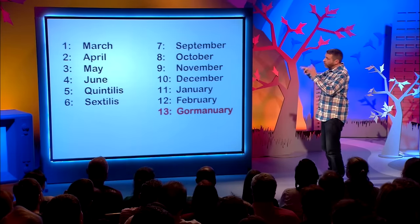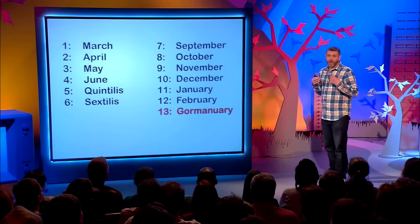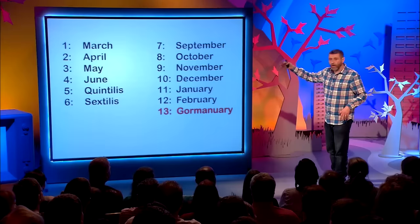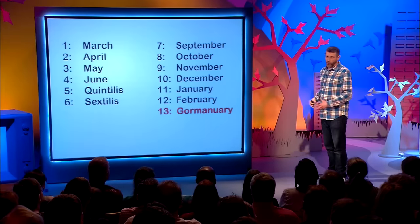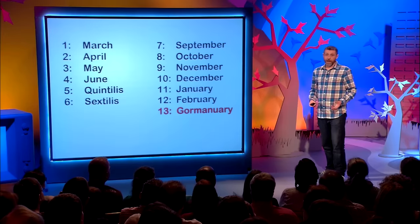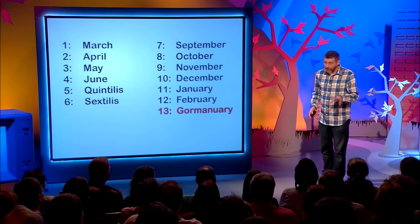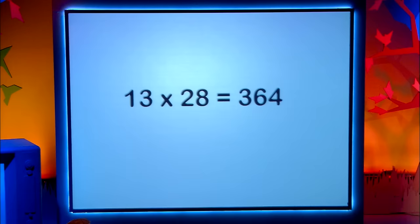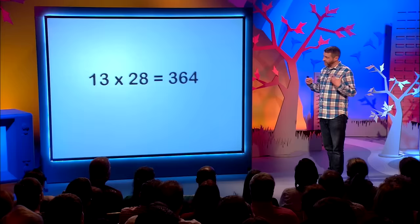March the 1st, New Year's Day, will always be a Sunday — because nobody wants to go straight back to work on New Year's Day. It will always be a Sunday because of the order in the calendar. The first of every month will always be a Sunday, the second always a Monday. And that means New Year's Eve, the 28th of Gormannuary, will always be a Saturday. Now, it might have occurred to some of you that 13 times 28 is 364, and that means we've got a day spare.